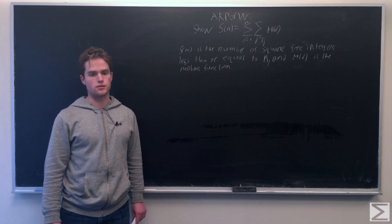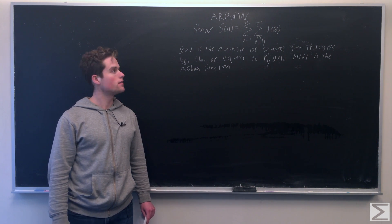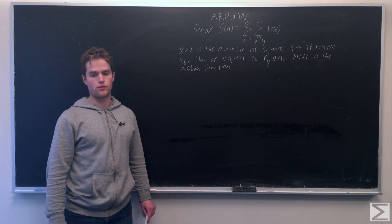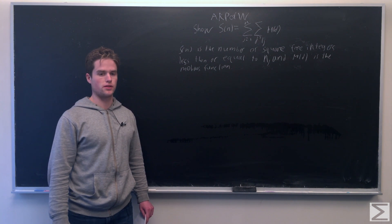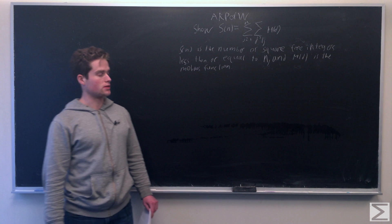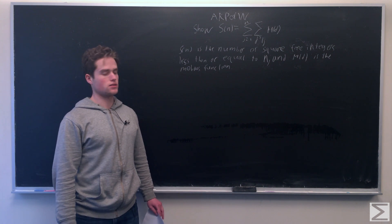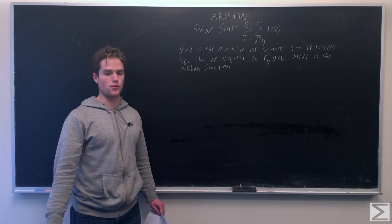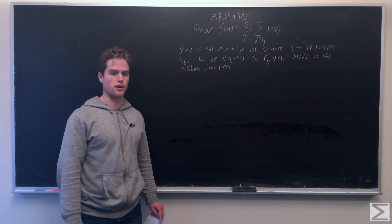s of n equals the sum from j equals 1 to n over the sum of all d, such that d squared divides j, of the Mobius function of d. s of n being the number of square-free integers less than or equal to n in this case.